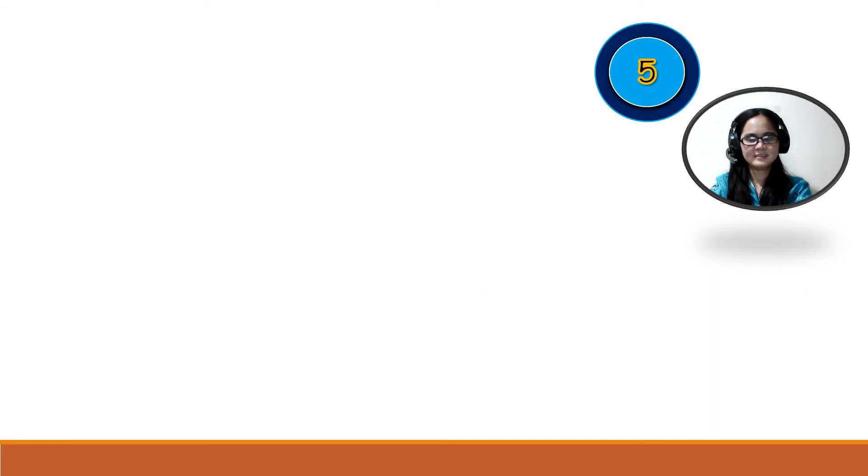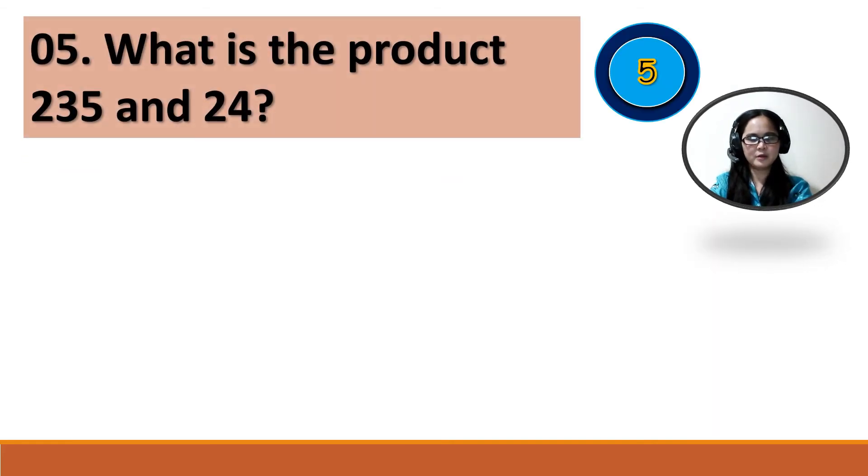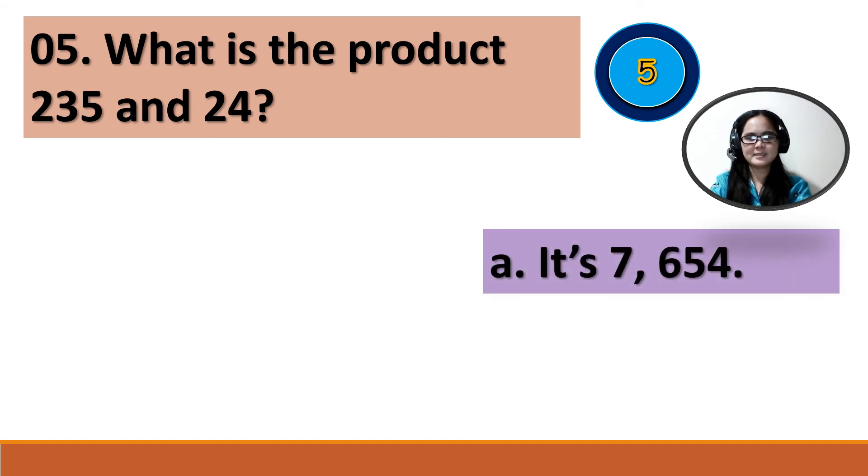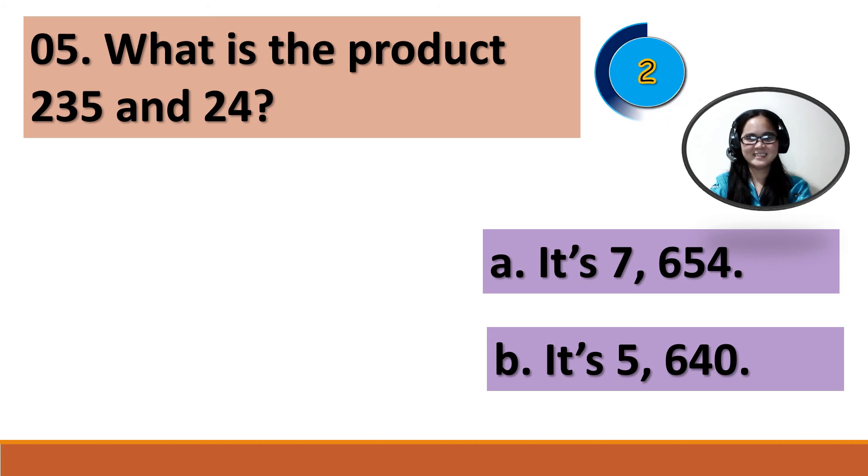Number 5: What is the product of 235 and 24? A. It's 7,654. B. It's 5,640. Your time starts now. The correct answer is letter B.